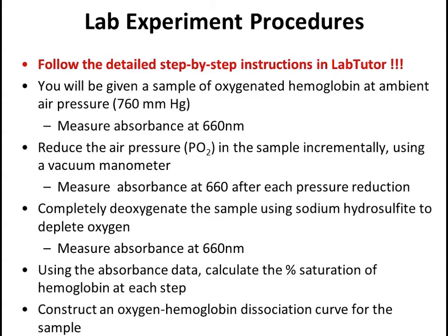In the lab, you'll be given a sample of oxygenated hemoglobin at ambient air pressure, which is 760 millimeters of mercury. You'll measure the absorbance of that sample at 660 nanometers. Then you'll reduce the air pressure, which also reduces the partial pressure of oxygen in the sample incrementally, using a vacuum manometer, and measure the absorbance after each reduction in pressure. Finally, you'll completely deoxygenate the sample by using a chemical to deplete oxygen and measure the absorbance. Using the absorbance data obtained, you'll calculate the percent saturation of hemoglobin at each step and use these numbers to construct an oxygen hemoglobin dissociation curve.